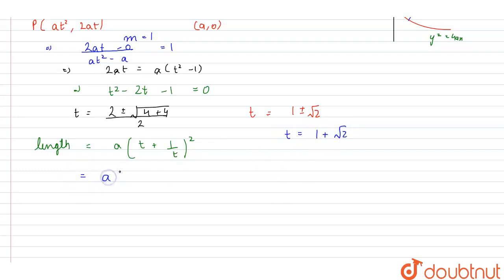So, the length becomes a into 1 plus root 2 plus 1 upon 1 plus root 2 whole square. Rationalizing 1 upon 1 plus root 2,